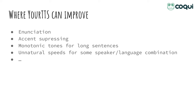So all of that sounds great, but where can Your TTS improve? The first point is enunciation — especially in Portuguese, we sometimes have pronunciation errors — mainly due to using characters as input instead of phonemes, which is a deliberate choice to allow use in languages where no phonemizer is available. There is also accent suppression: in zero-shot we rarely encounter problems, but for voices in the training set, we observe a small accent when making a voice speak in another language. For long sentences, we sometimes observe a monotonic, flat tone. We also observe unnatural speech for some speaker-language combinations, and we still have some audio artifacts.